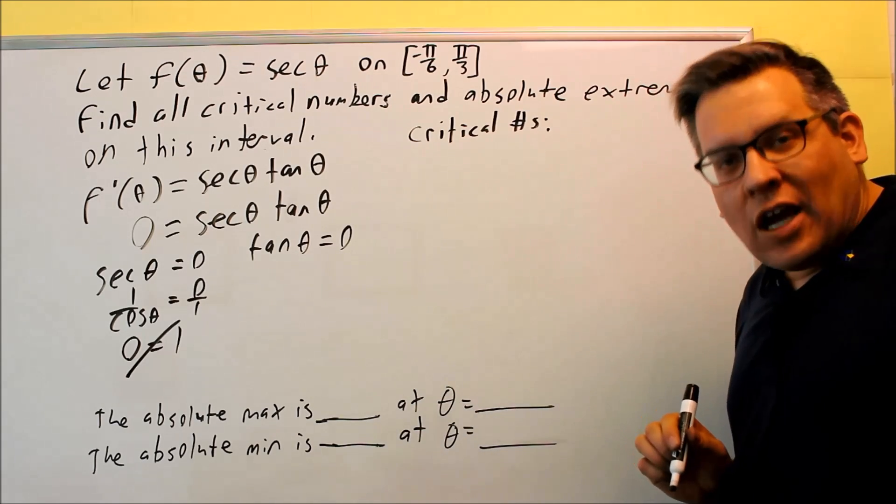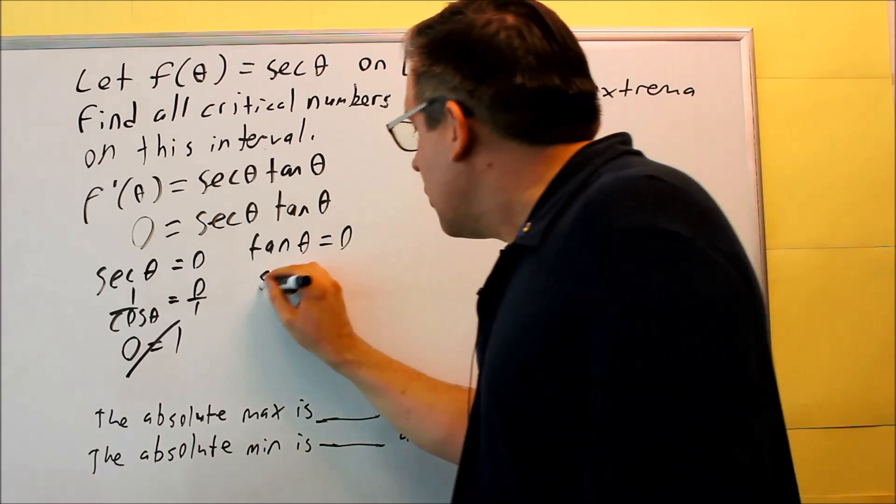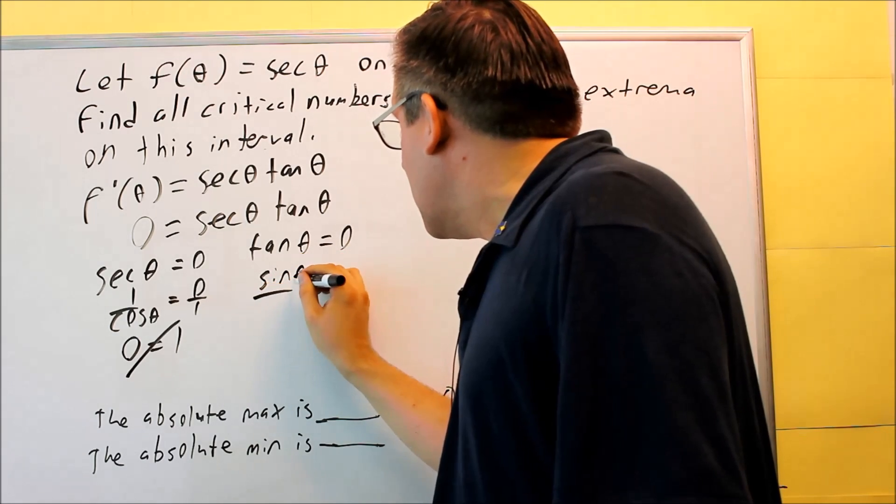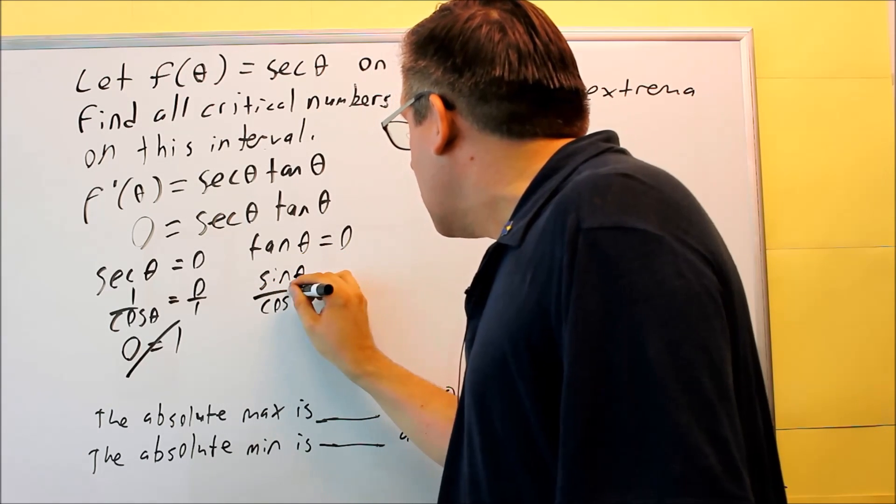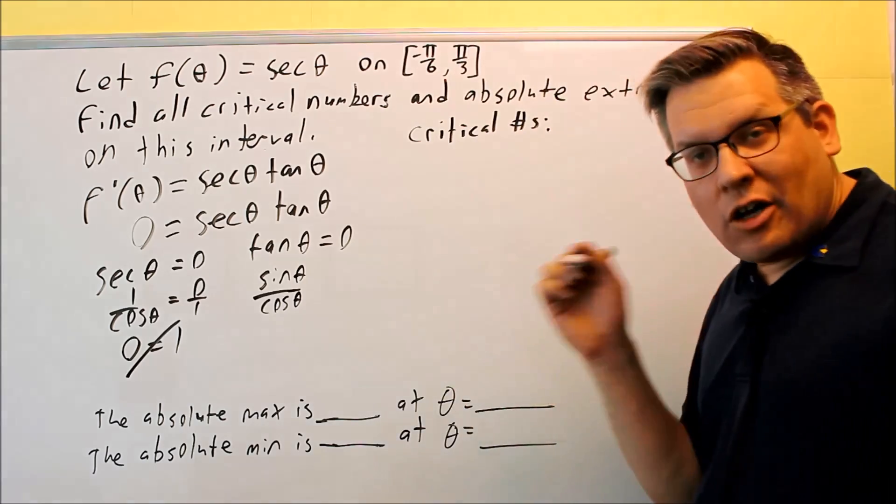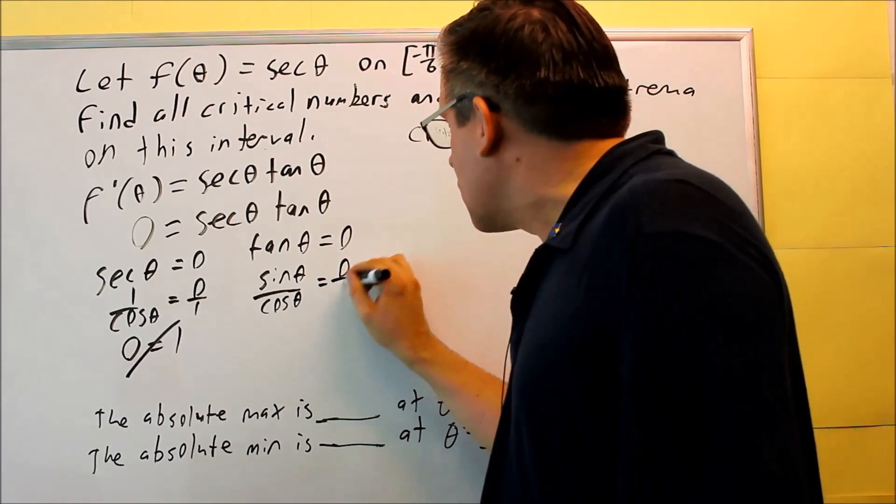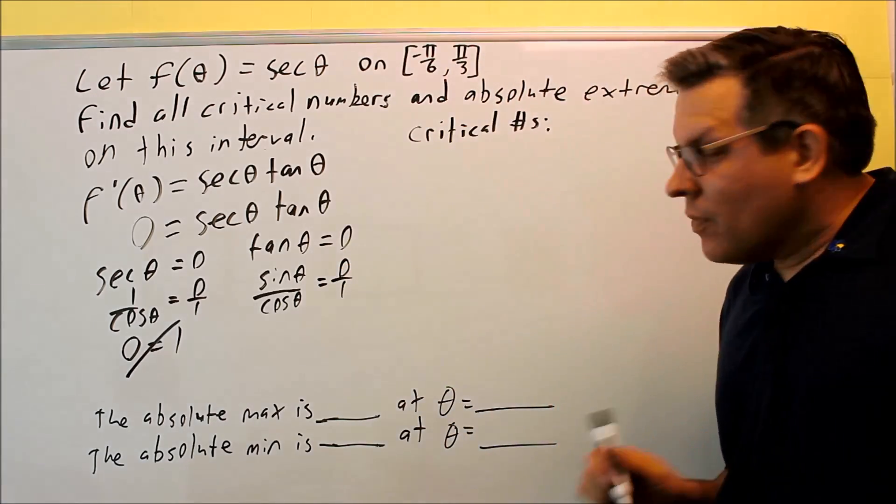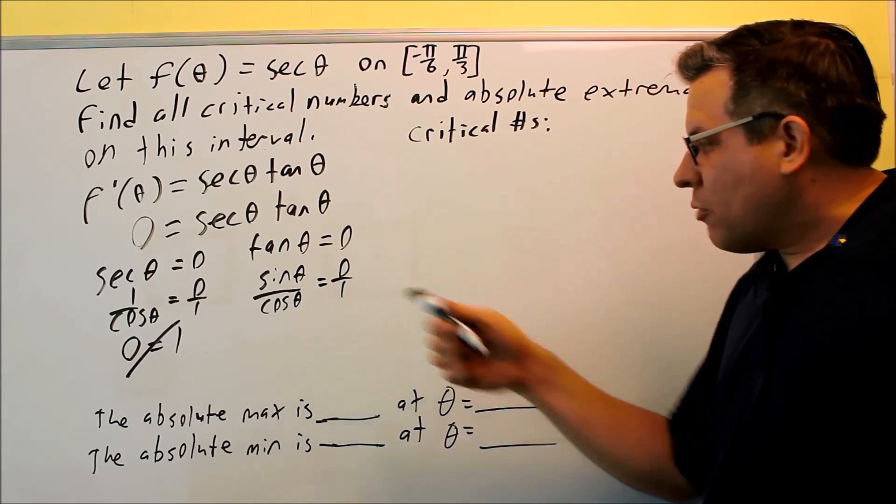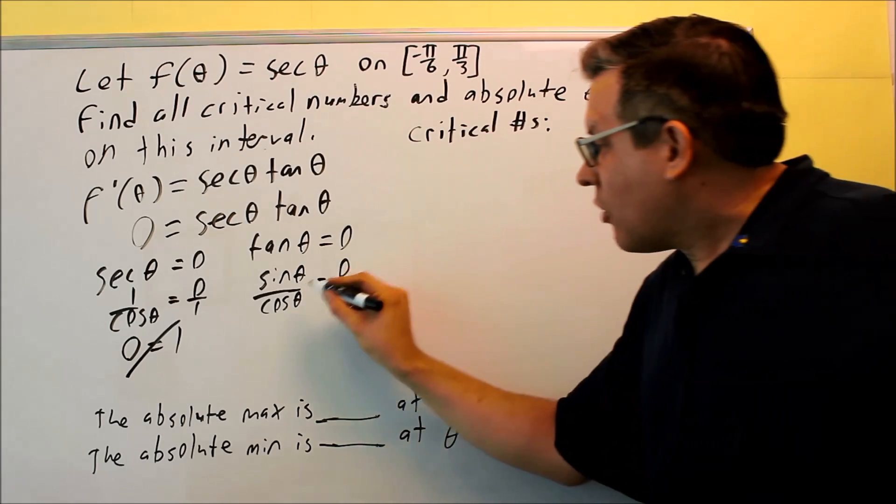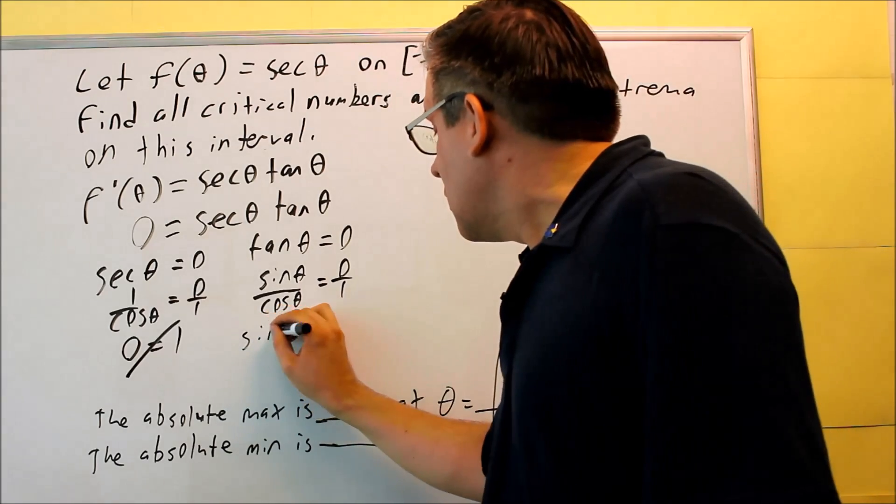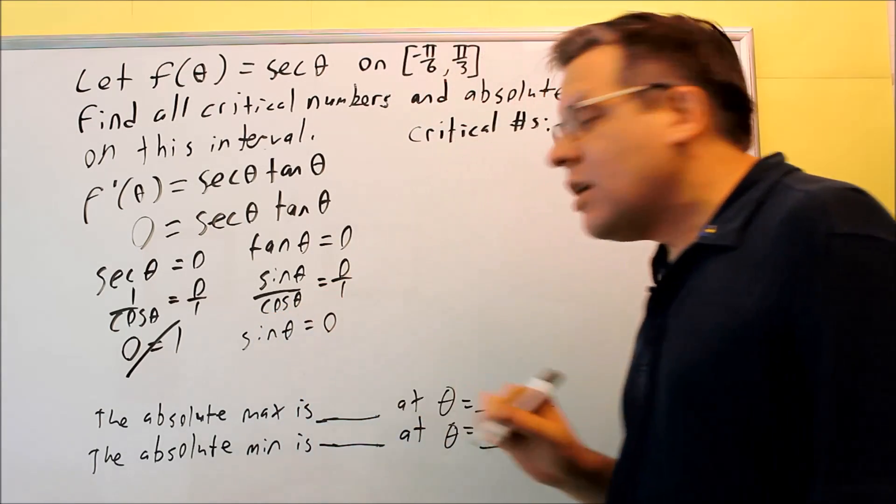So now we're going to take a look at tangent theta equals zero. We can do the same thing. We can put in an identity for this one. You could look at your table if you have a table of values, but I'm going to do it this way using the identity. Sine over cosine, again I'm going to write that as zero over one. If I cross multiply this, I get sine theta equals zero.